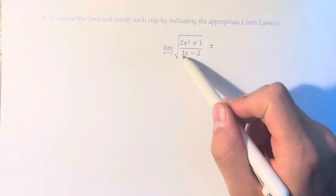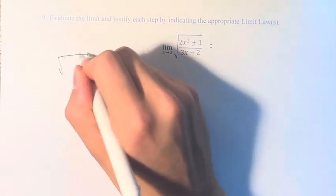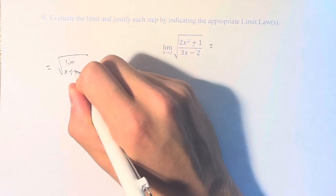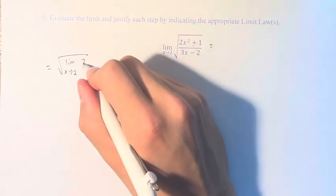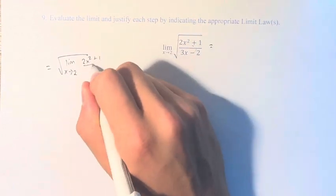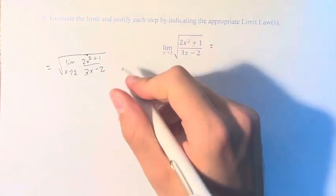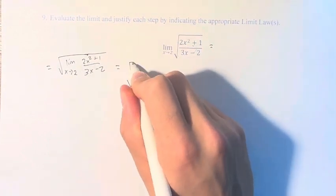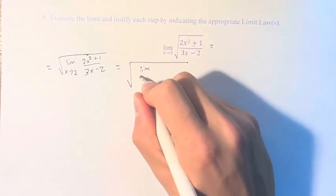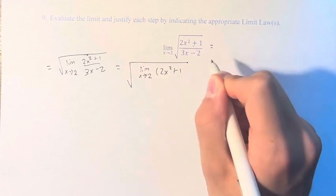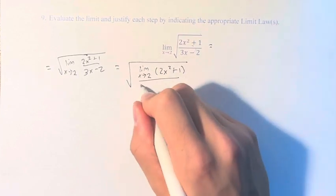So if we have the limit of this thing within the square root, we can take the square root of the limit. And then if we have the limit of this fraction, this can be the limit of the numerator over the limit of the denominator.